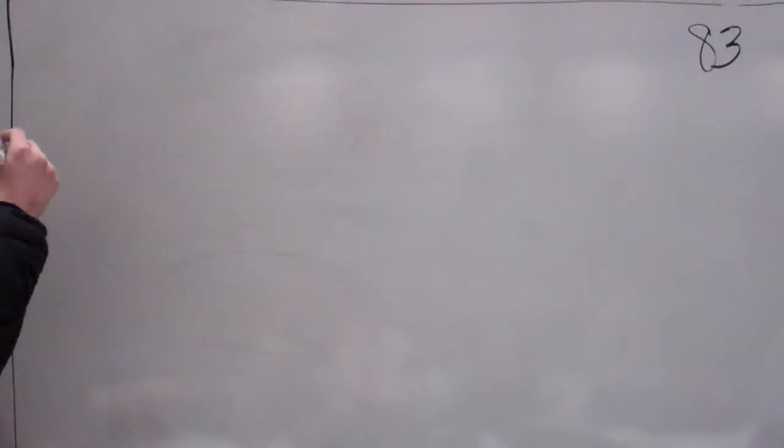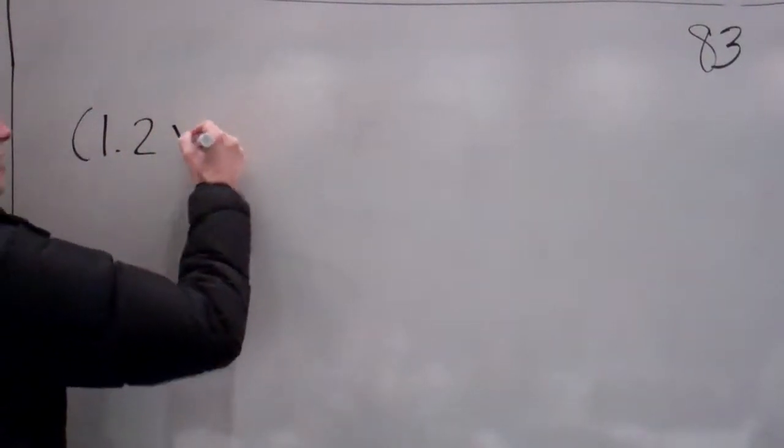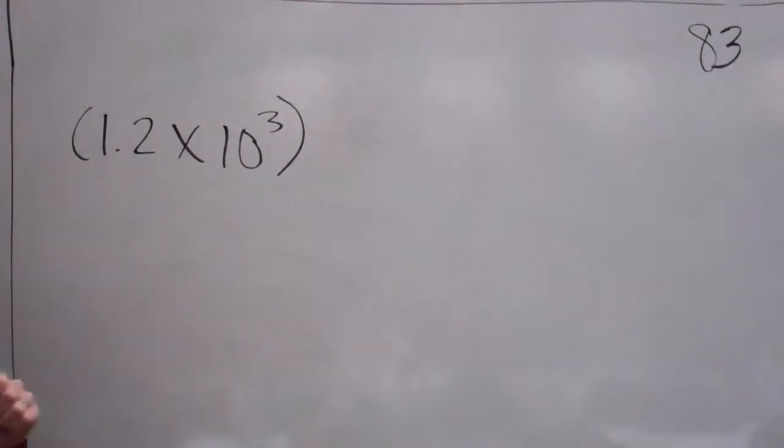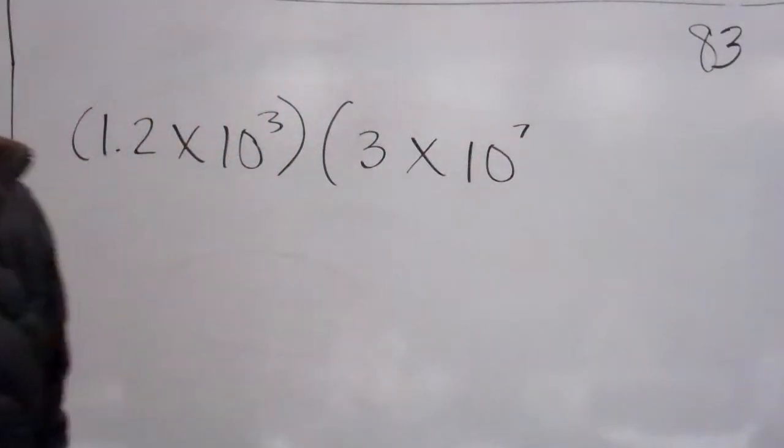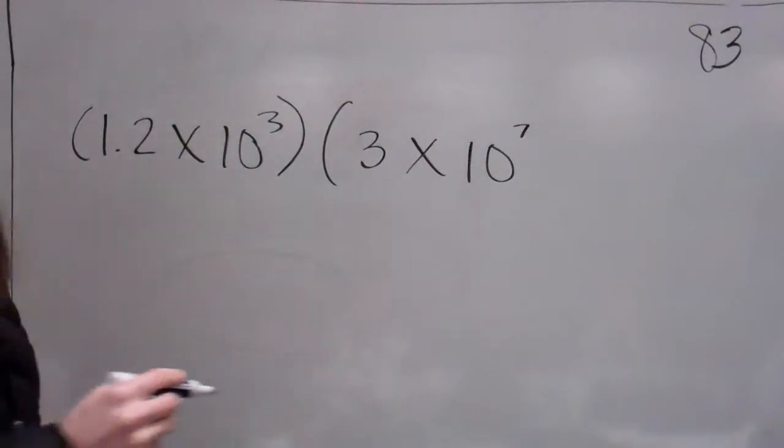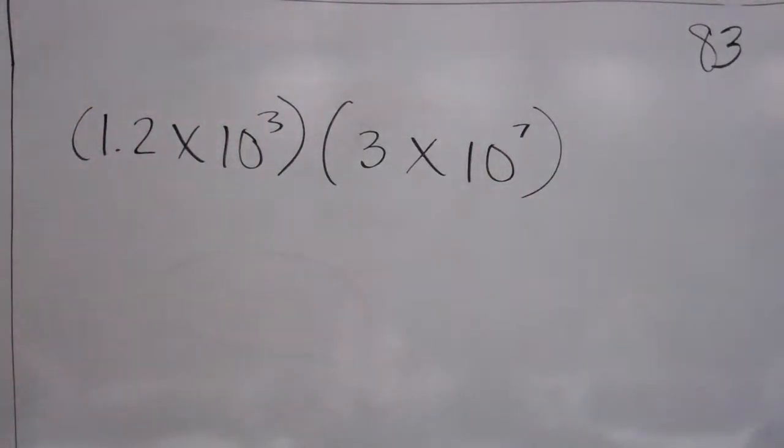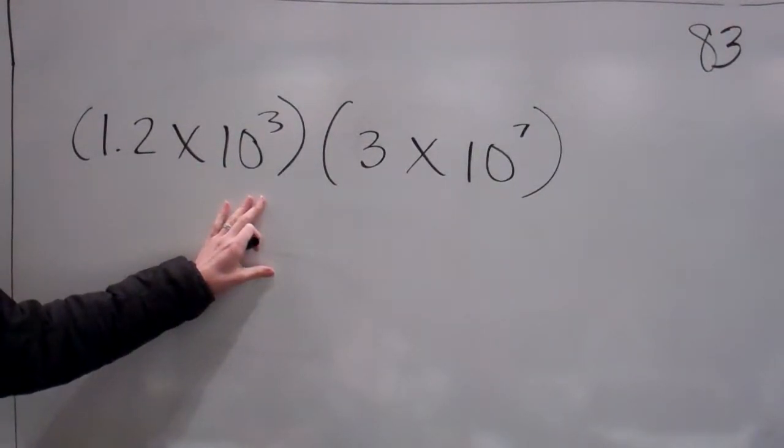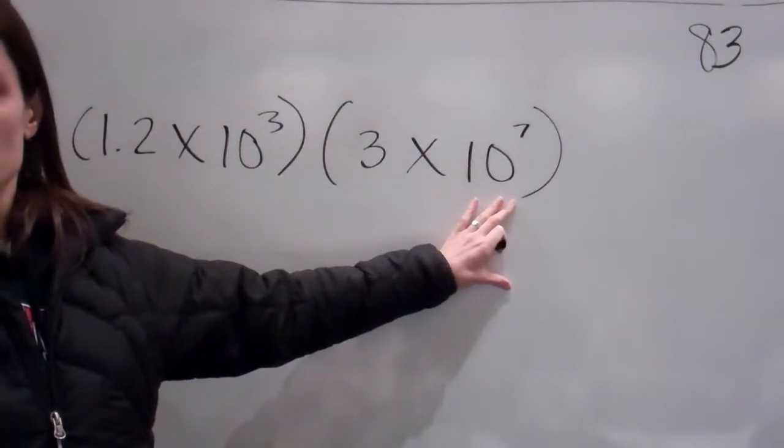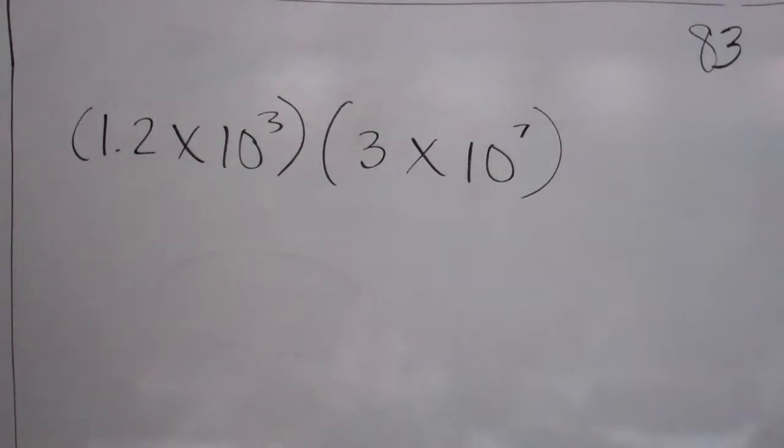For example, it says to multiply 1.2 times 10 to the third power times 3 times 10 to the seventh power. I believe it was 7. Now, there's actually a very easy way to do this. How many zeros does this one have? 3. And how many zeros would this one have? 7. Does everybody remember that I can do 5 times 3 or I can do 3 times 5? Multiplication, you can switch the numbers up at any point. So guess what? The way that we can perform this is quite easy.